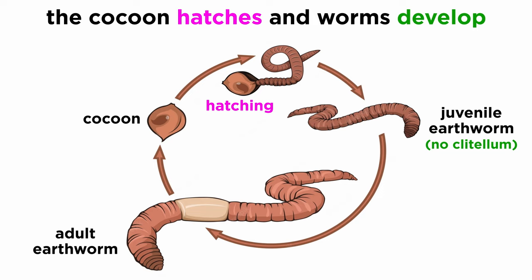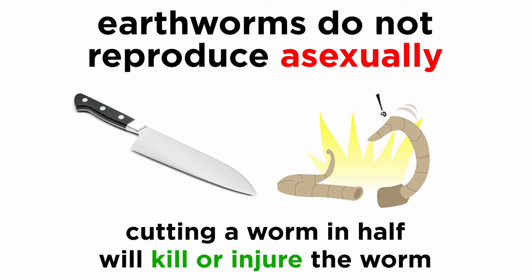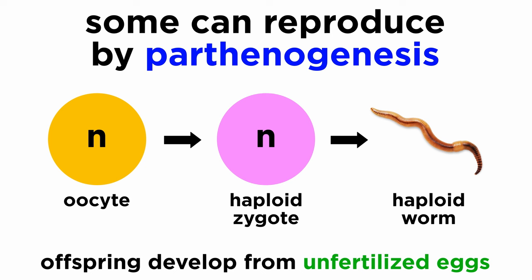Contrary to popular belief, most earthworms cannot reproduce asexually. Cutting an earthworm in half will usually result in a dead or greatly injured worm. Though some species can reproduce parthenogenically — that is, the young develop directly from unfertilized eggs — they cannot reproduce through any form of breakage.